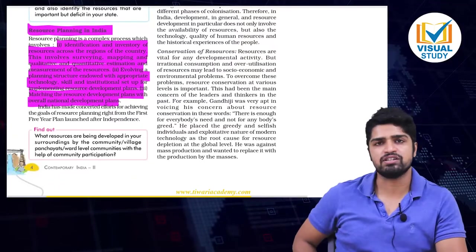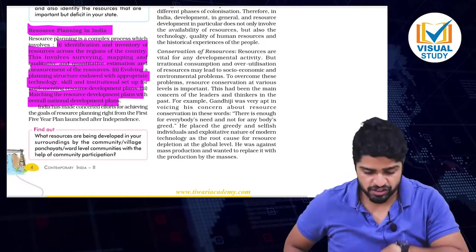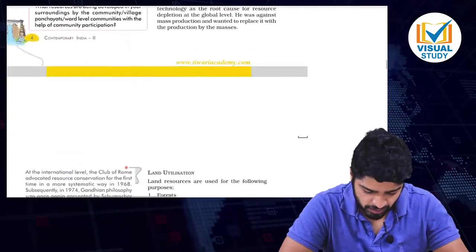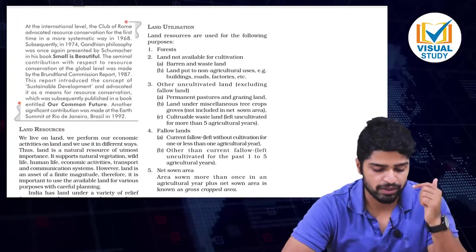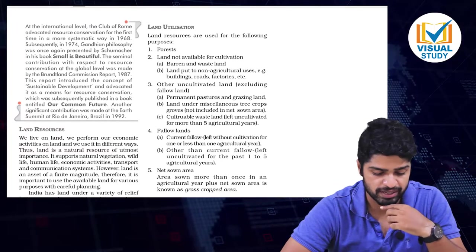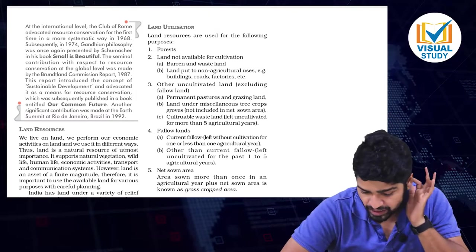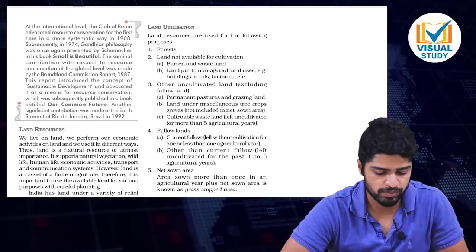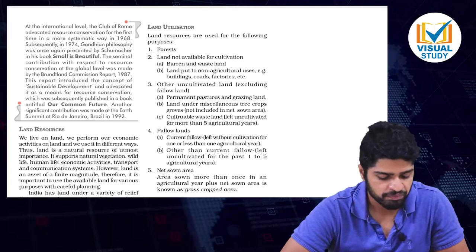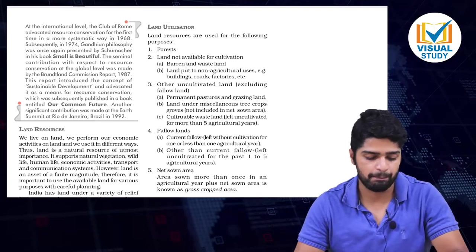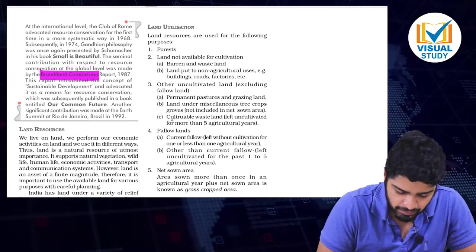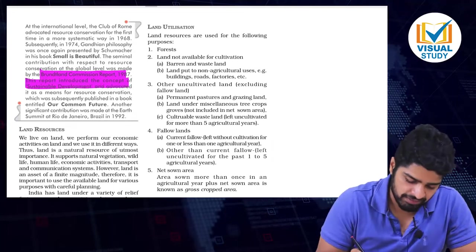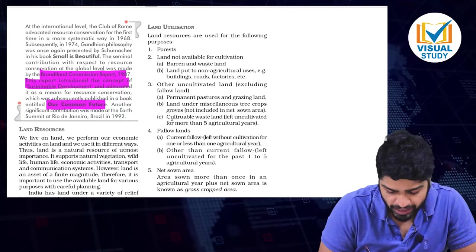At the international level, the Club of Rome advocated resource conservation for the first time in a more systematic way. Subsequently in 1974, Gandhian philosophy was again presented by Schumacher in his book 'Small Is Beautiful.' The seminal contribution with respect to resource conservation at the global level was the Brundtland Commission Report of 1987, which made way for sustainable economic development and was entitled 'Our Common Future.'